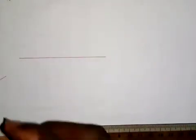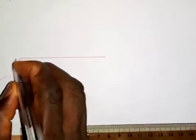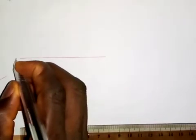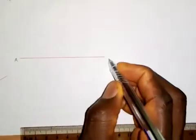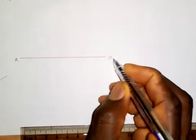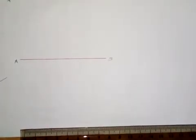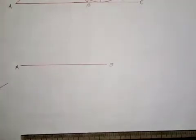This is point A and this is point B. So the next thing that we are going to do is to bisect line AB.